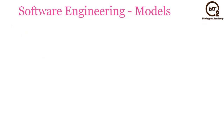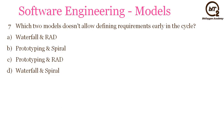The next question is: which two models do not allow defining requirements early in the stage? If we want customer feedback and the requirements are changed depending on that feedback, allowing requirements to be defined early in the cycle will not be possible. Prototyping and Spiral Model do exactly the same, so the answer will be Prototyping and Spiral Model.